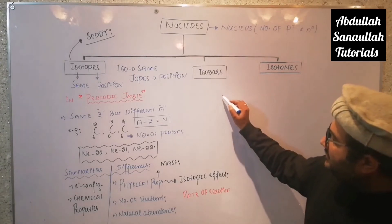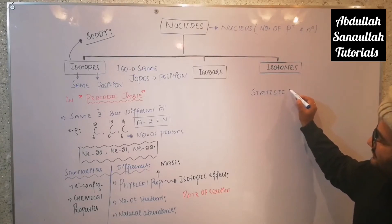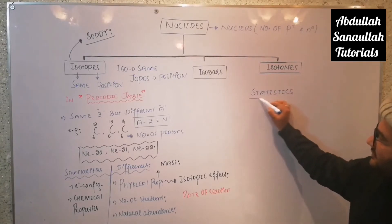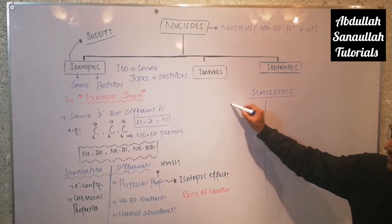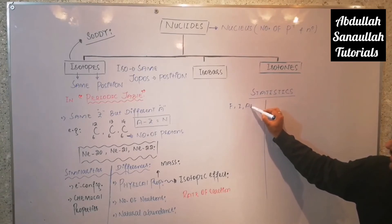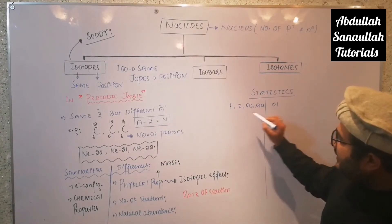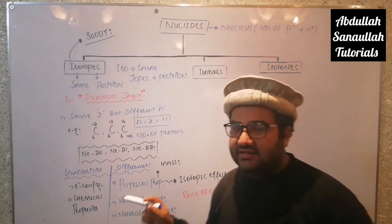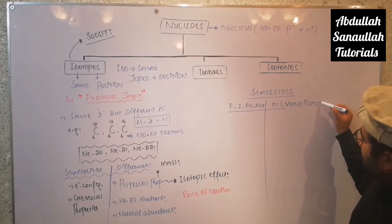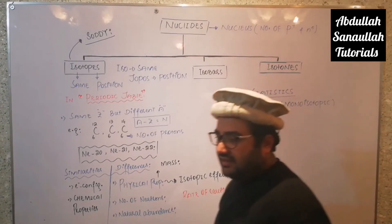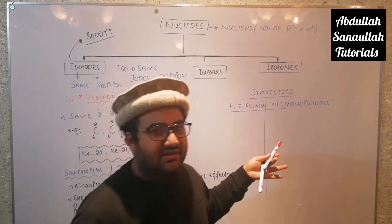Statistics of isotopes: some elements have only a single isotope — fluorine, iodine, arsenic, and gold. Because they have only one stable naturally occurring isotope, they are referred to as mono-isotopic elements. Overall in the periodic table, there are 26 elements that are mono-isotopic.